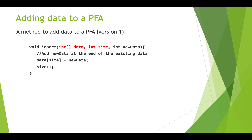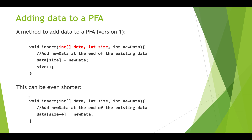To use a function, here's a method called 'insert' that takes the array, the current size (how many slots are filled), and the new data to insert. Inside, we use size as the index, assign that slot to hold newData, then increment size. This can be written more concisely using postfix notation: data[size++] = newData — which assigns newData to data[size] and then increments size, all in one line.